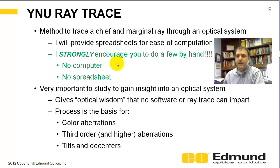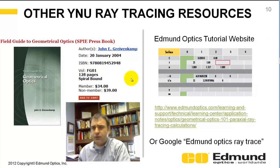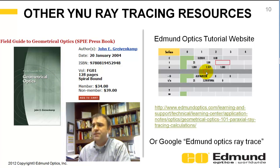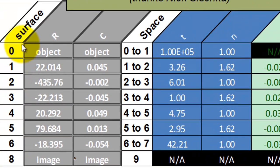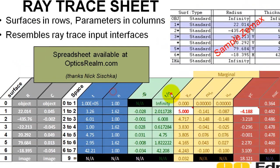This YNU ray trace is the basis for not only first order properties, but color aberrations, third order and higher aberrations, and you can also use it to include tilts and de-centers. I'll be providing a spreadsheet. John Greivenkamp's Field Guide to Geometrical Optics is a great resource — about $30 to $40; can't recommend this book enough. Edmund Optics also has a tutorial website. Both put parameters in each row and surfaces in columns. I will be doing the opposite, transposing the spreadsheet so that surfaces are in different rows and parameters in different columns.